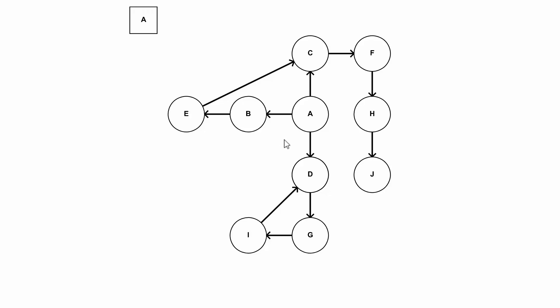Here we have our graph, and up here we have a queue that we're going to be adding nodes to. Down here we also have a queue - we can't see it yet - of nodes that we've visited. Let's just run the algorithm and see what happens.